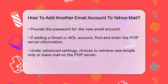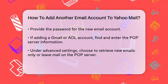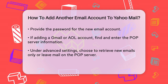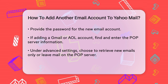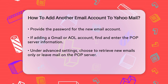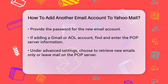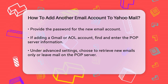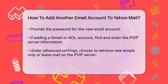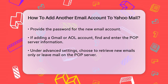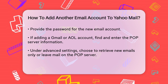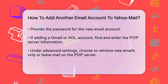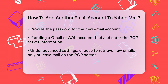For instance, if you're adding a Gmail account, you can search for Gmail POP Server to find the necessary information. Under Advanced Settings, you can choose to retrieve new email only, which means it will only pull emails that arrive from the point you set this up. You can also choose to leave the mail on the POP Server, which is a good idea if you're forwarding emails to multiple accounts.